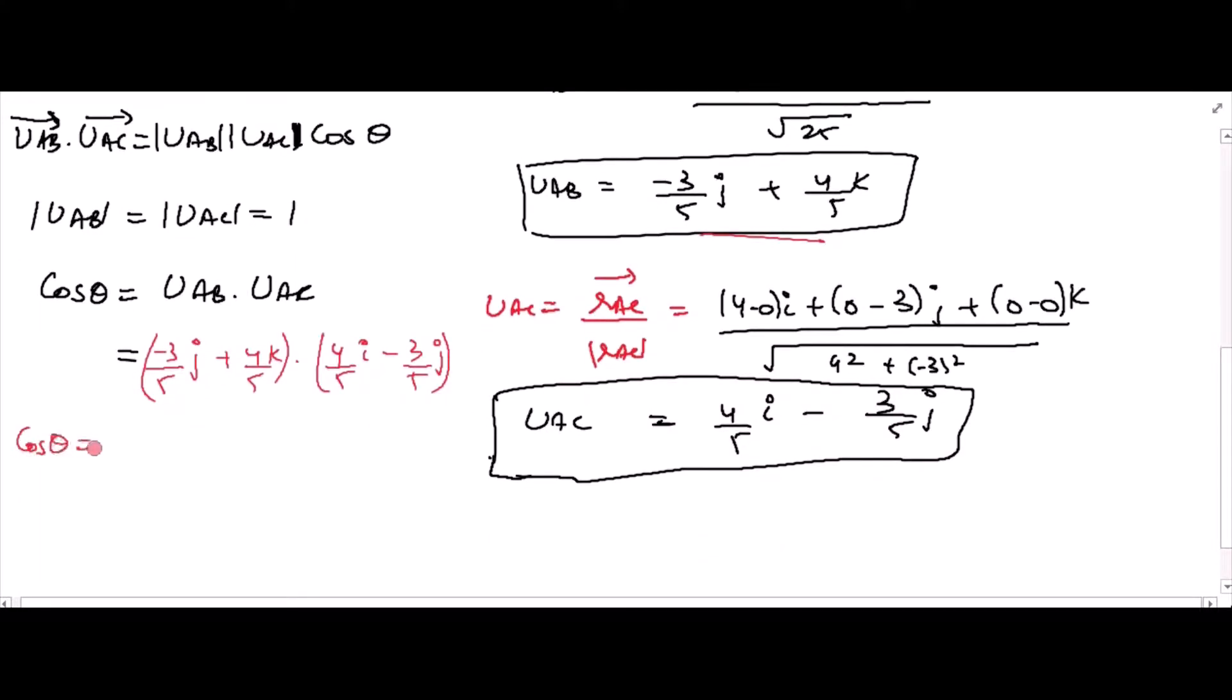Cos theta is equal to negative 3 over 5 times 4 over 5 j dot i plus 4 over 5 times 3 over 5 j dot j plus 4 over 5 times 4 over 5 k dot i minus 4 over 5 times 3 over 5 k dot j.